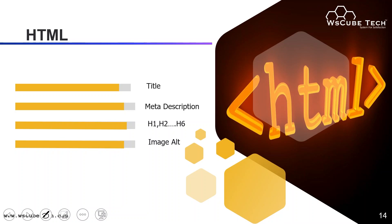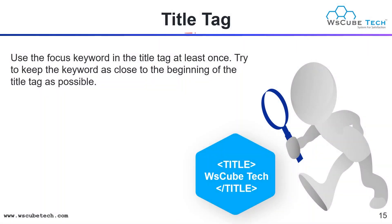Now let's start with the HTML part. HTML — Hypertext Markup Language — is the language used in the creation of your website. In the HTML part we take care of title, meta description, header tag, and image alt text. For title optimization, we focus on the keyword and mention it in the title. Include it in the title tag at least once and try to keep the keyword as close to the beginning of the title tag as possible.